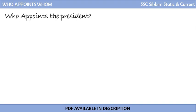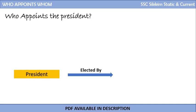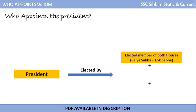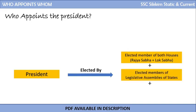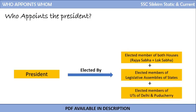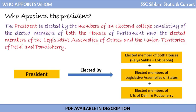Who appoints the President? We saw that so many appointments are done by the President, but who appoints the President? The President is not appointed but elected — by the elected members of both houses, that is Rajya Sabha and Lok Sabha; by the elected members of the Legislative Assemblies of the states; and by the elected members of the Legislative Assemblies of the Union Territories of Delhi and Puducherry. So the President is elected by an electoral college consisting of all these members.